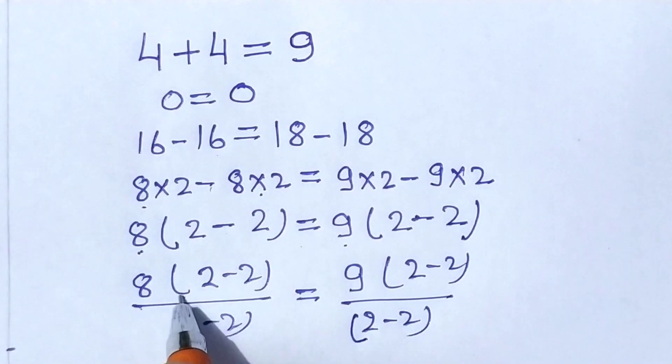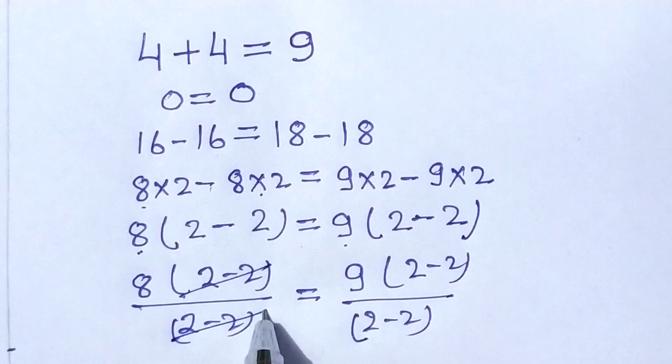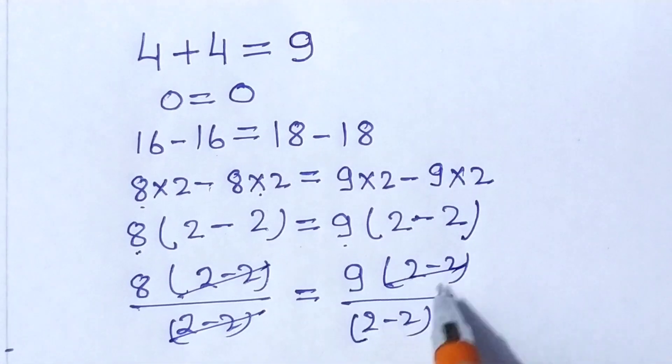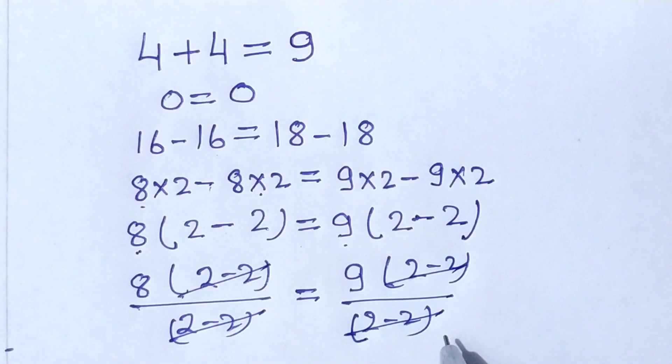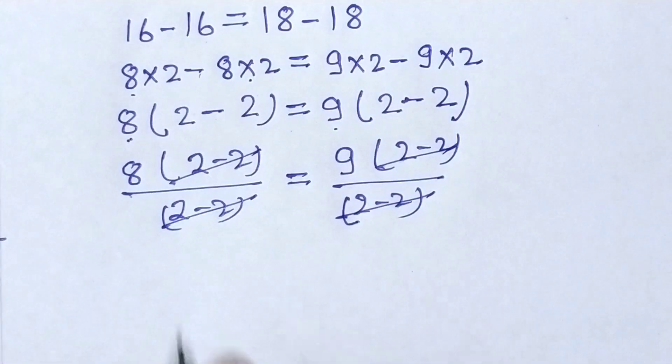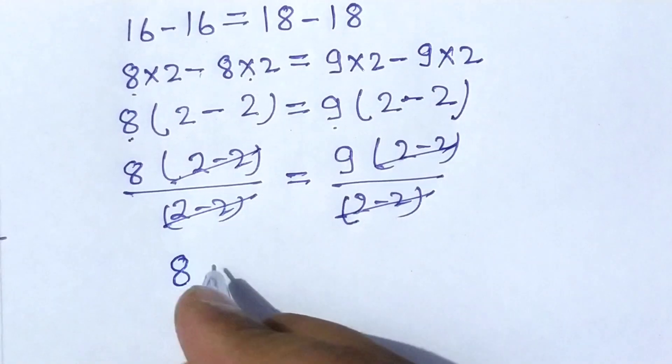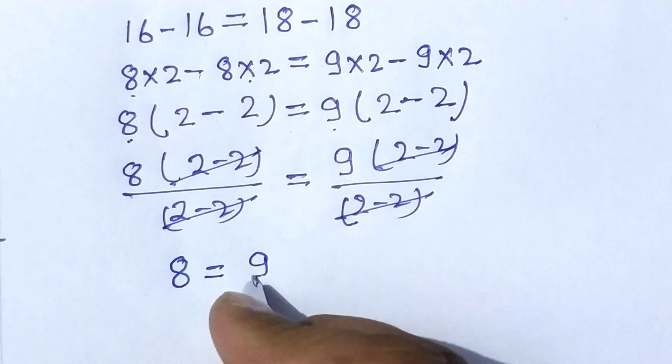Here, this and this 2 minus 2 will cancel out. This and this 2 minus 2 will cancel out. It will be equal to 8 is equal to 9.